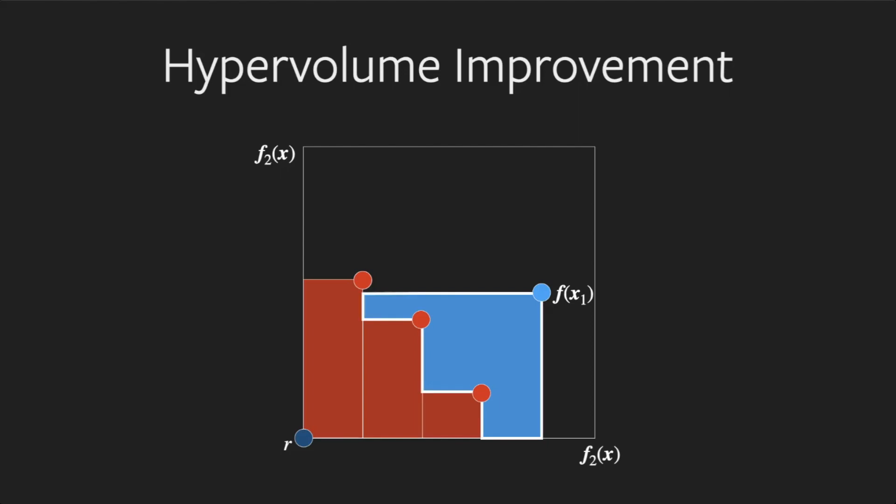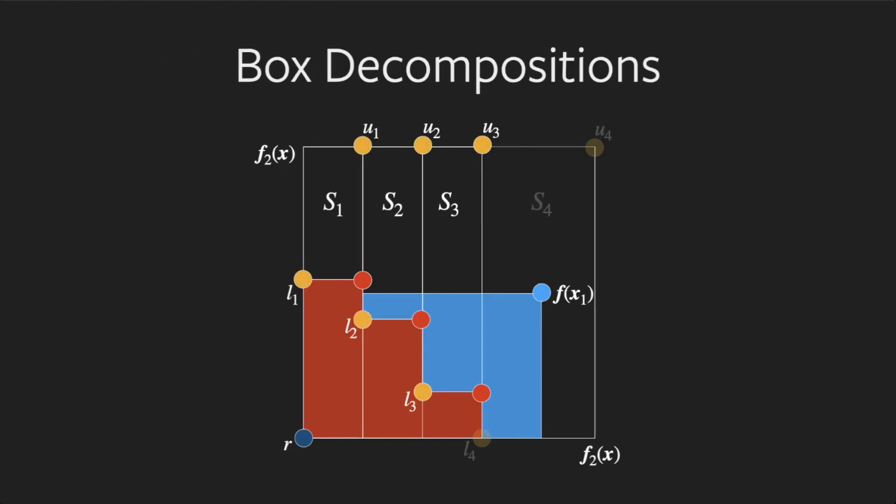This is typically a non-rectangular polytope. Hence, hypervolume improvement is frequently computed using box decompositions in a piecewise fashion.